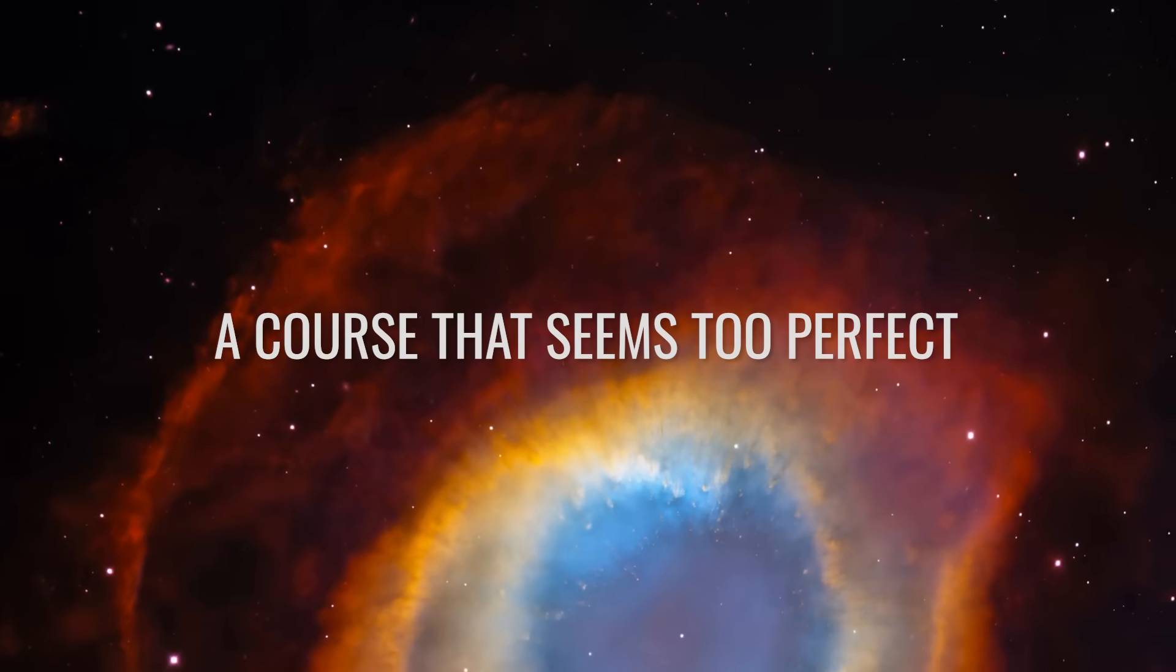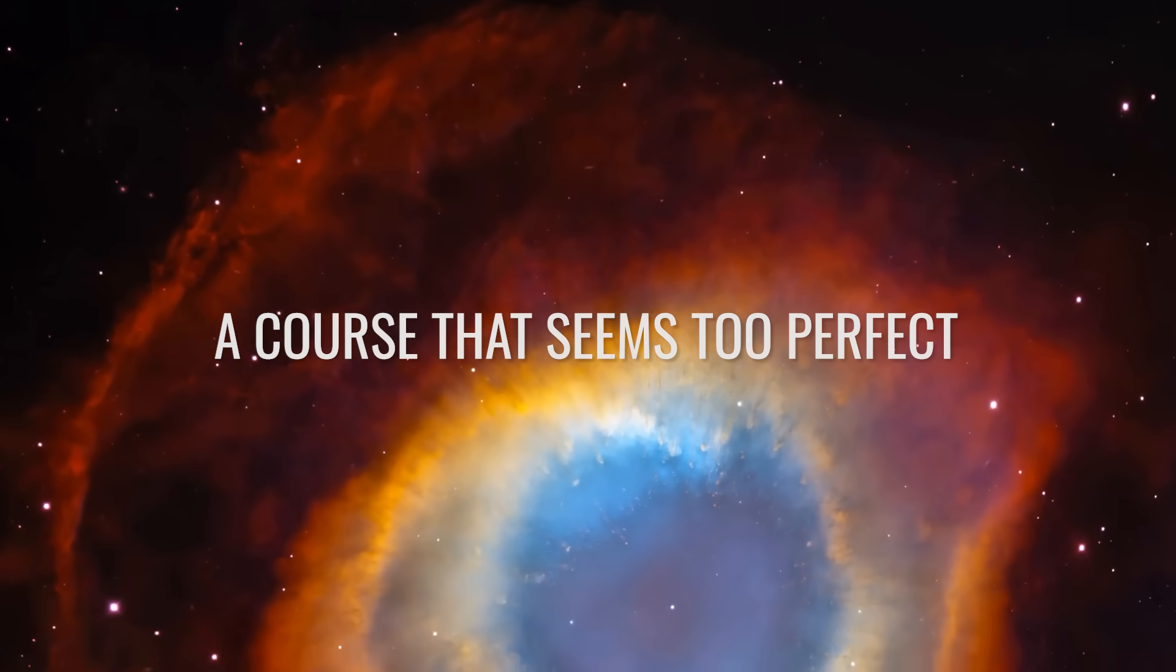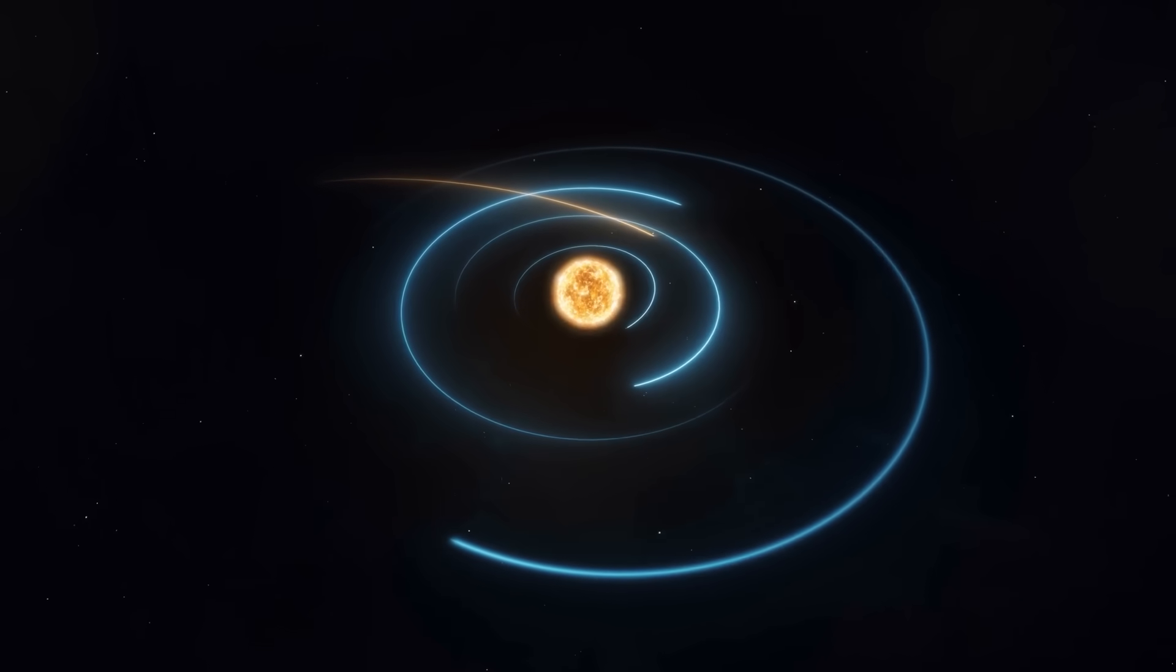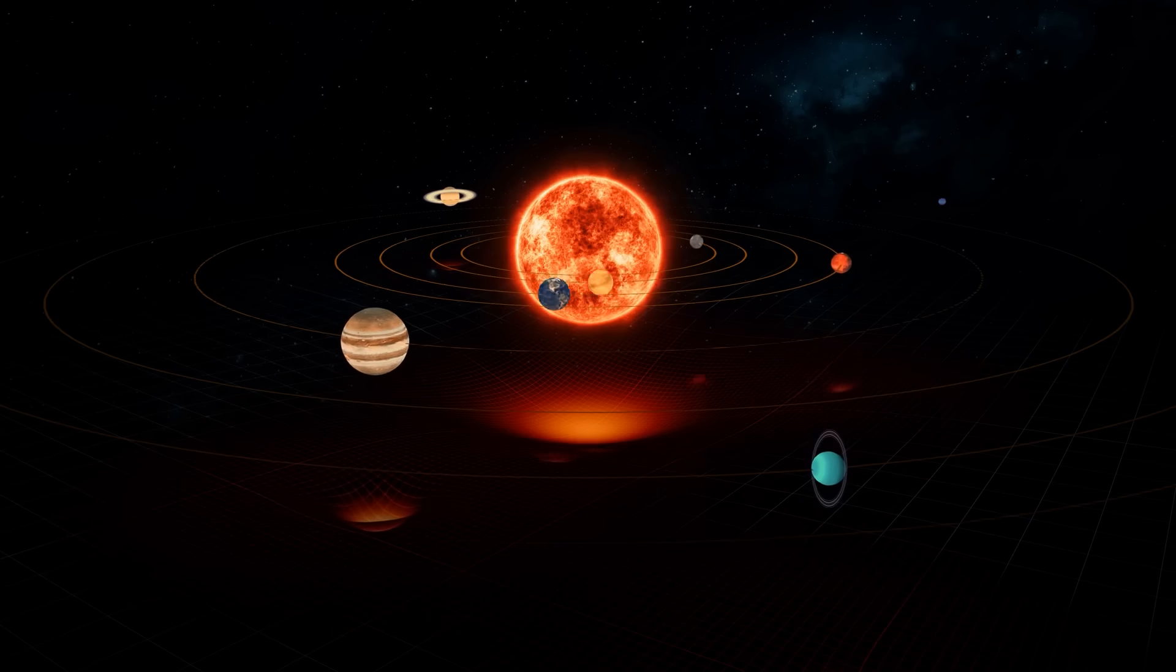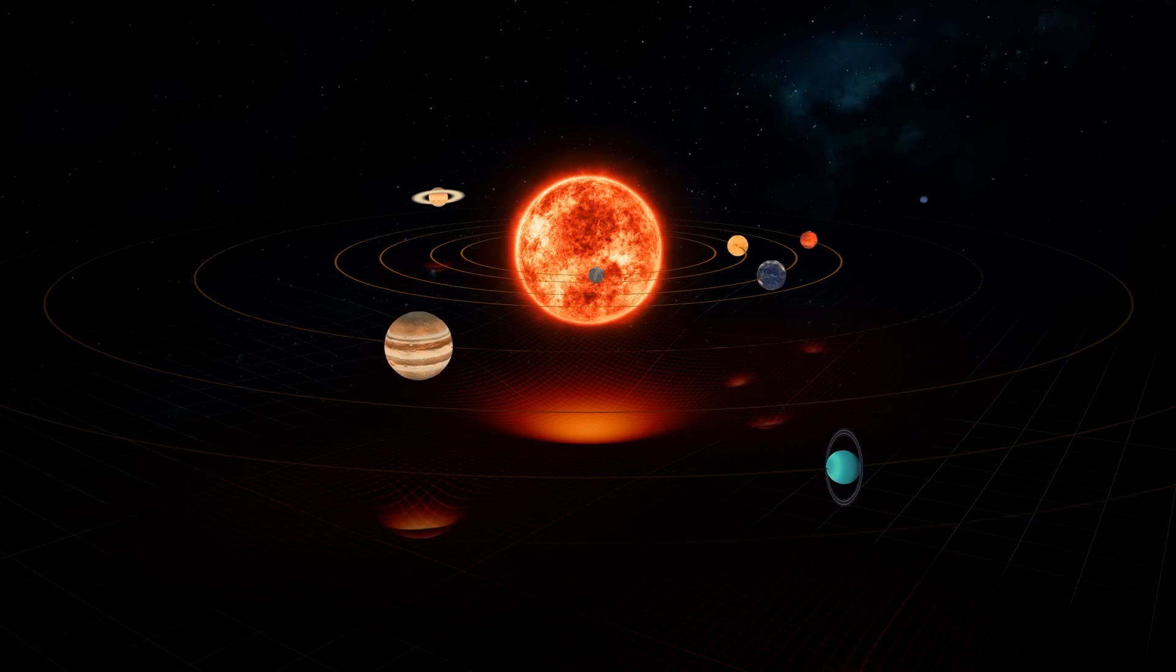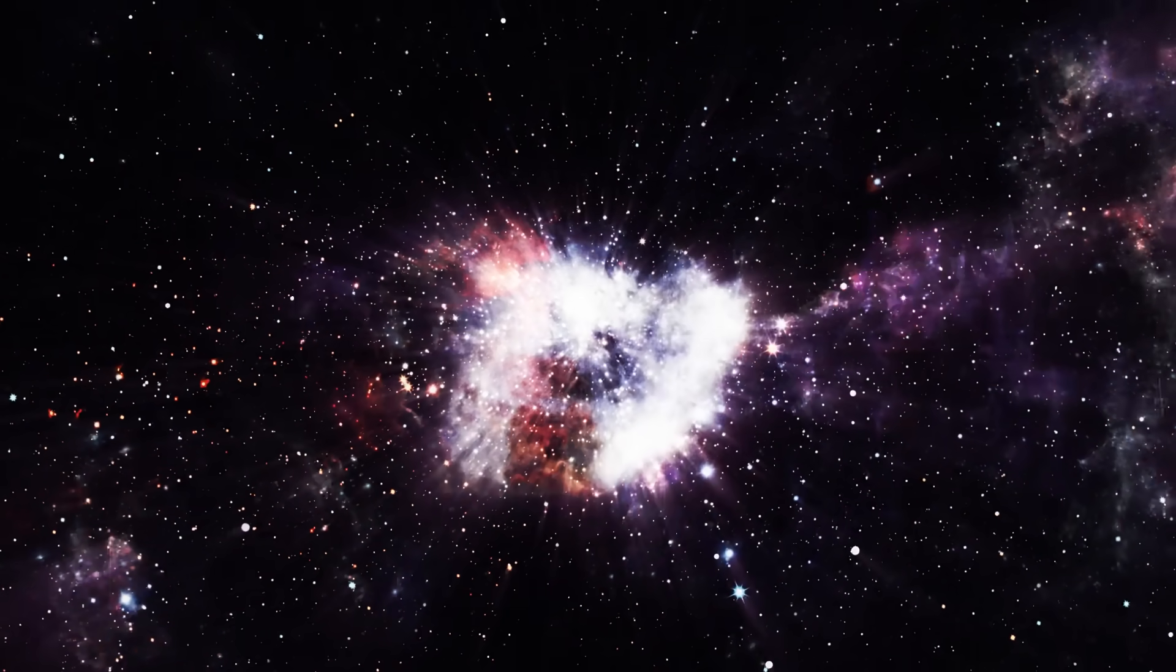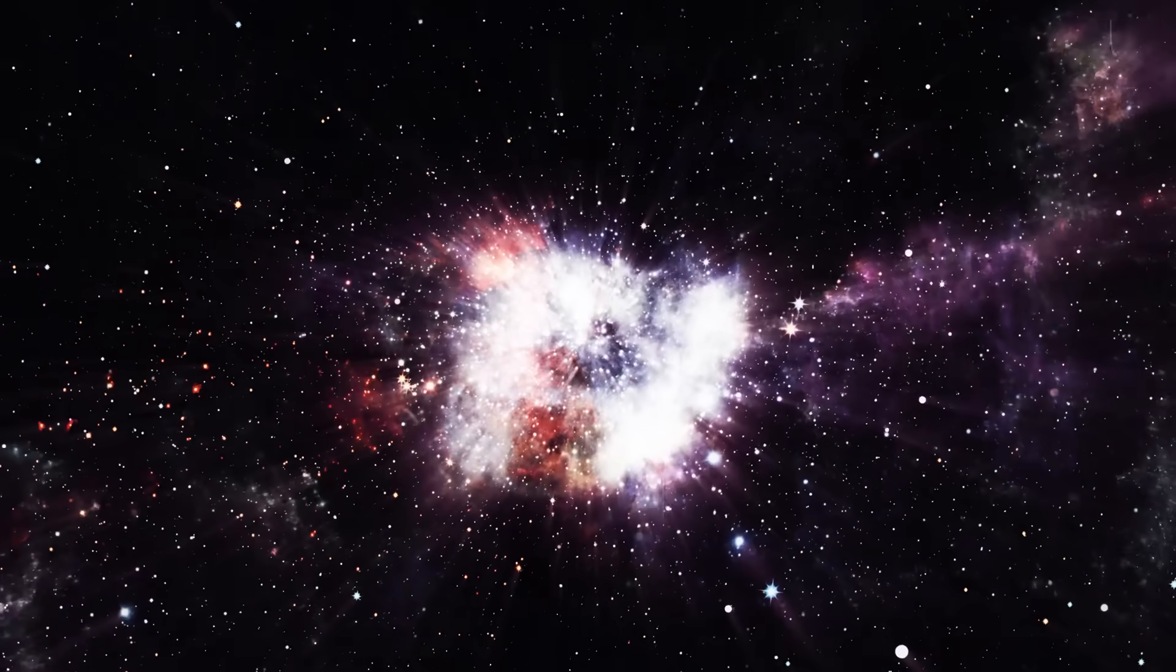A course that seems too perfect. 3i Atlas moves on an almost circular trajectory within the ecliptic, the very plane on which our planets orbit the Sun. For a body coming from the depths of interstellar space, this is statistically almost impossible.